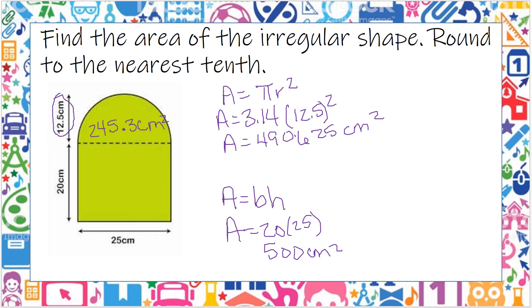So now I've got two different measurements here. So all I need to do is add them. So 245.3 plus 500 gives me 745.3, and that is centimeters squared.